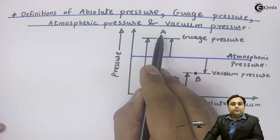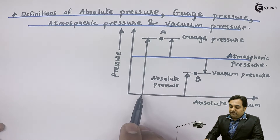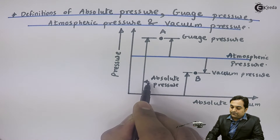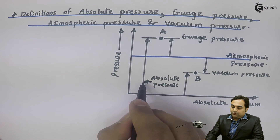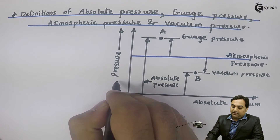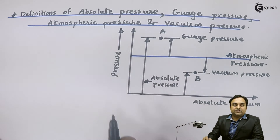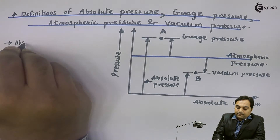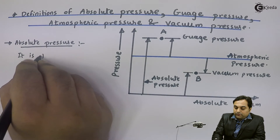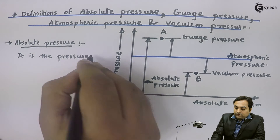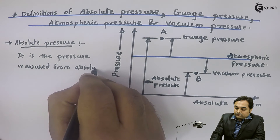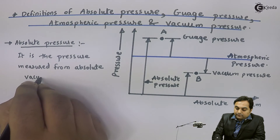Suppose I am taking point A. At this point, if I am measuring the pressure from absolute vacuum, that would be called absolute pressure. As we can see in this diagram, from the absolute vacuum up to point A, if I am reading the pressure value, that becomes my absolute pressure, because the vertical axis indicates pressure. So, absolute pressure is the pressure measured from absolute vacuum.